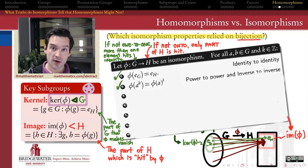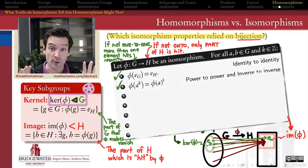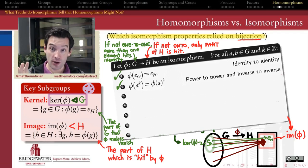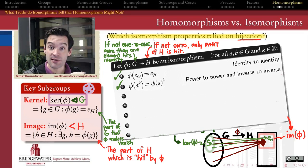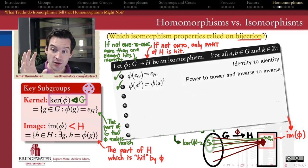We've just finished establishing probably one of the most important things about homomorphisms from a group G to a group H: the image of that homomorphism will necessarily be a subgroup of the target group H. And most importantly, the kernel of that homomorphism — that subset of all elements getting sent to the identity element in the target group — is a normal subgroup of G, and therefore tells us a way in which G can be built out of a normal subgroup.